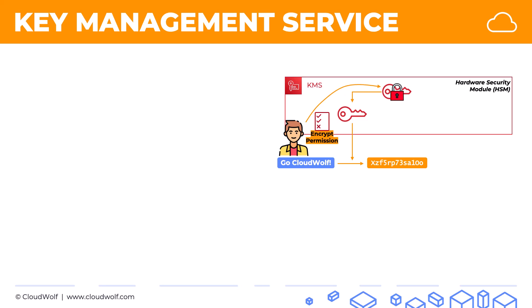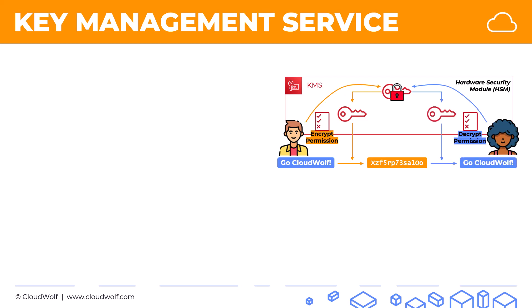We've encrypted the sensitive information, and now we have a user, Sally, who wants to decrypt it. Sally has decrypt permissions to use the key. She accesses the key, decrypts it using that key, and gets the information.